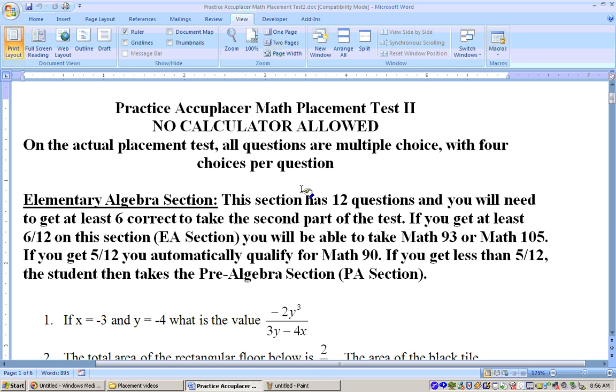Okay, these are the practice problems from the Accuplacer replacement test. The first section is on elementary algebra and consists of 12 questions. You'll need to get about five or six of these right to move on to the next section.